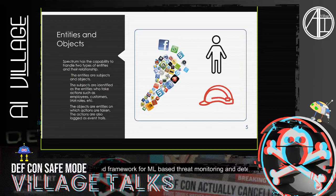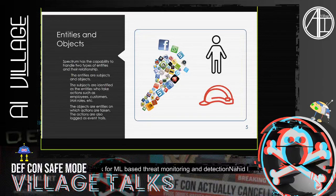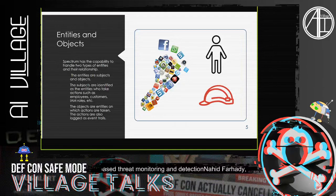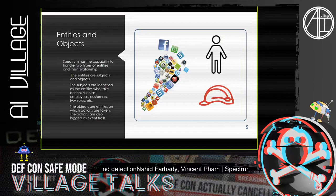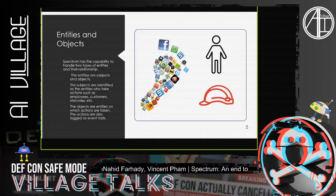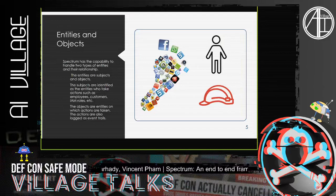The objects are entities on which actions are taken, and those actions are recorded as event trails. You could think of every time someone logs into a VPN — what time they logged in, if they badge into a building, if they opened a laptop. Events like these are recordable and provide evidence of whether insider threat activity is occurring.